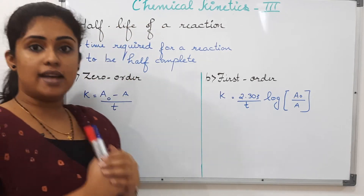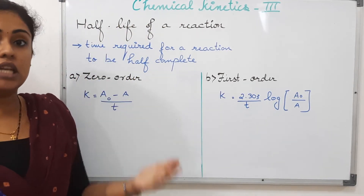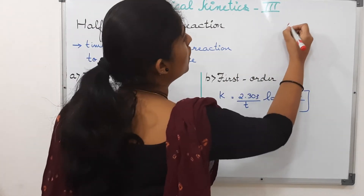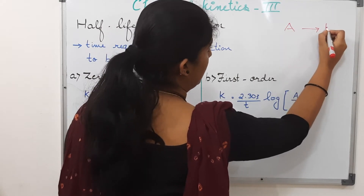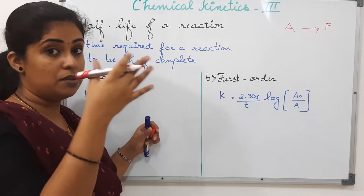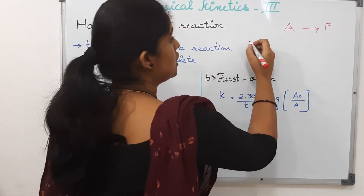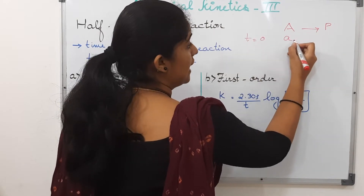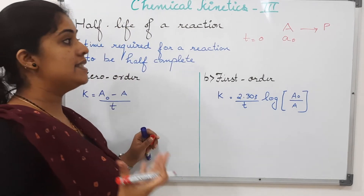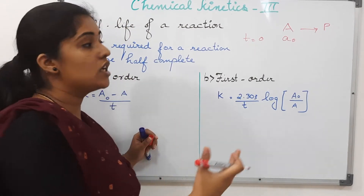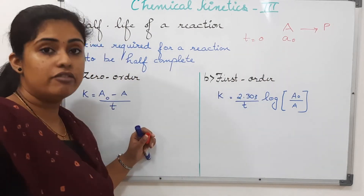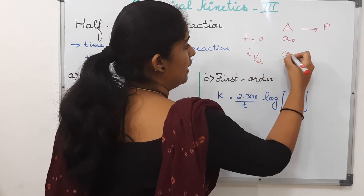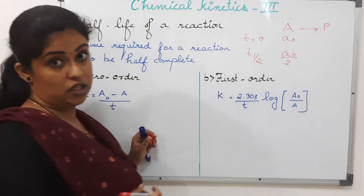So firstly, half-life. What is half-life? Half-life is the time that is required for a reaction to be half-complete. That is, if I have a reactant A which gets converted to some product P, half-life is the time in which the concentration of the reactant becomes half of its initial concentration. That is, at time t-half, the concentration of the reactant is A-naught by 2.